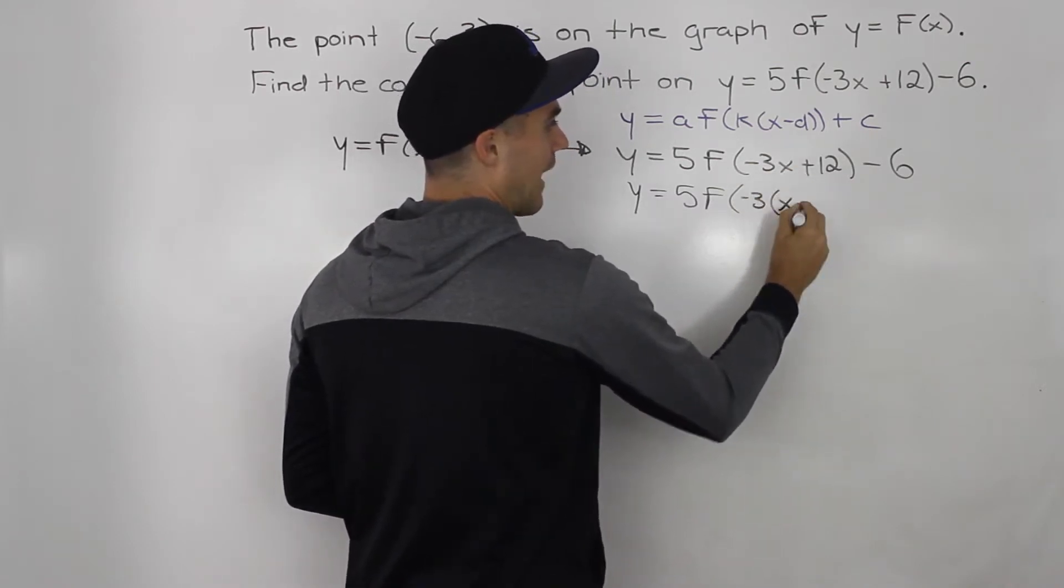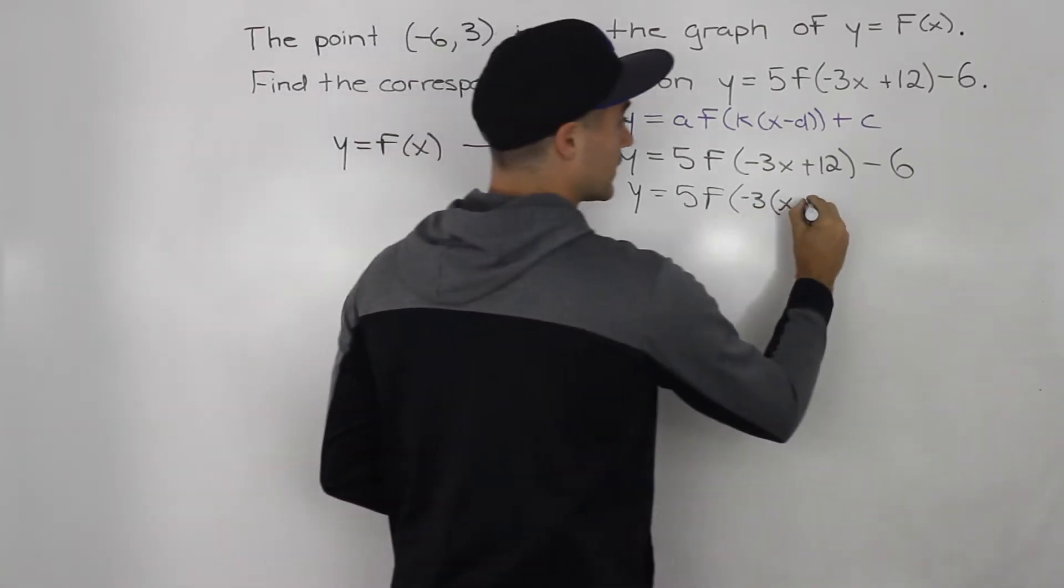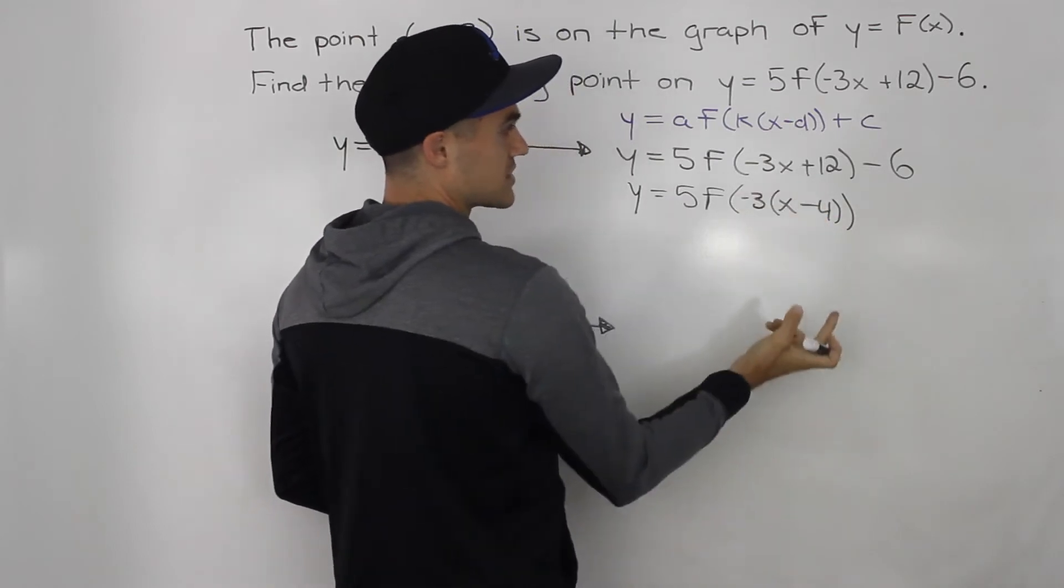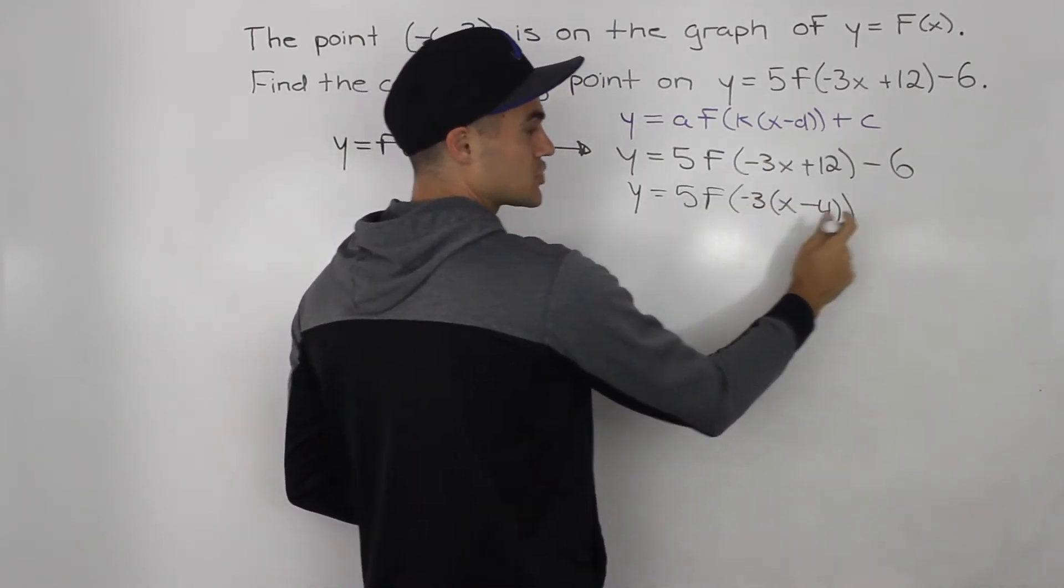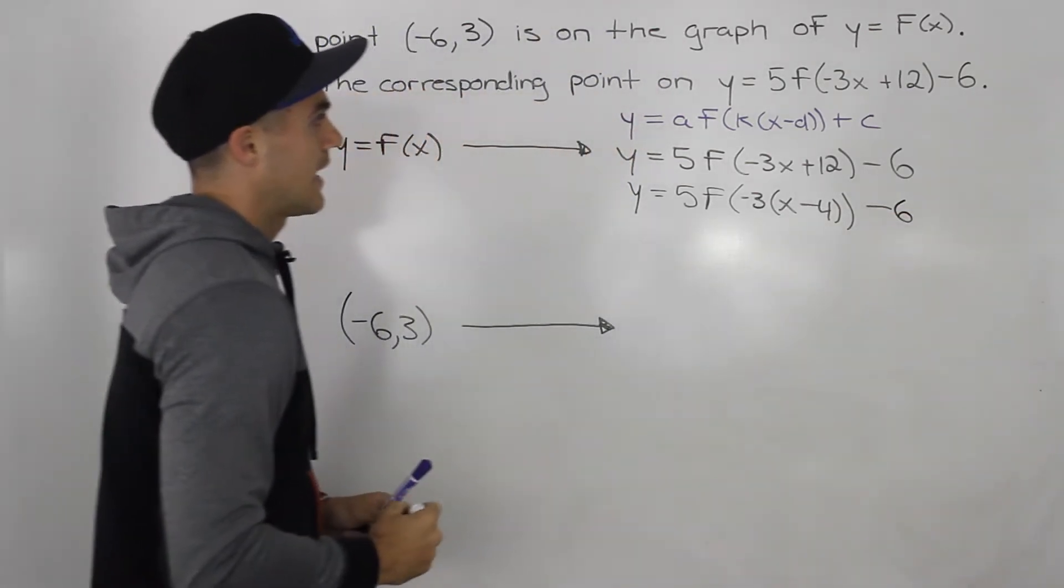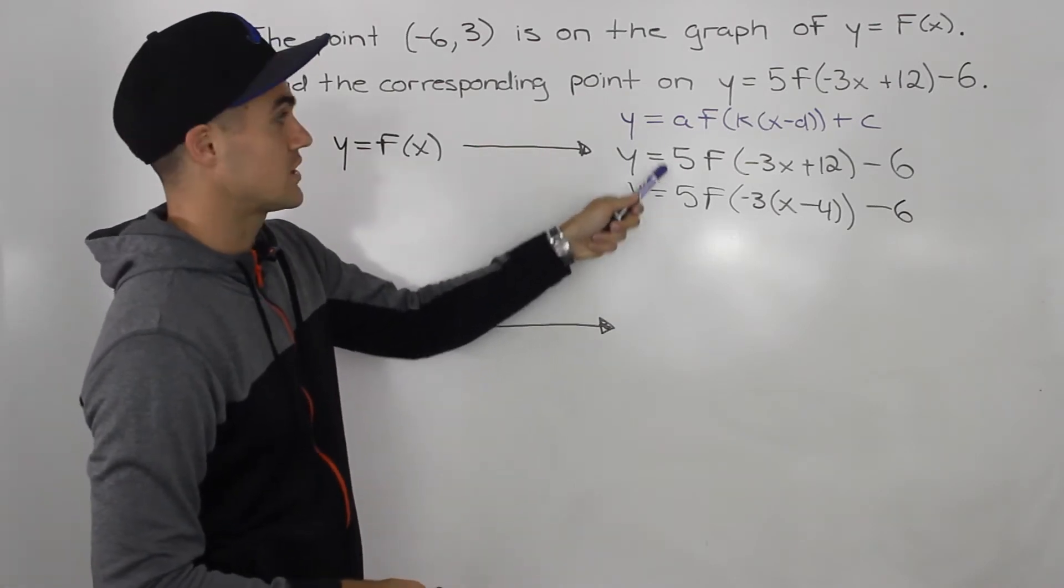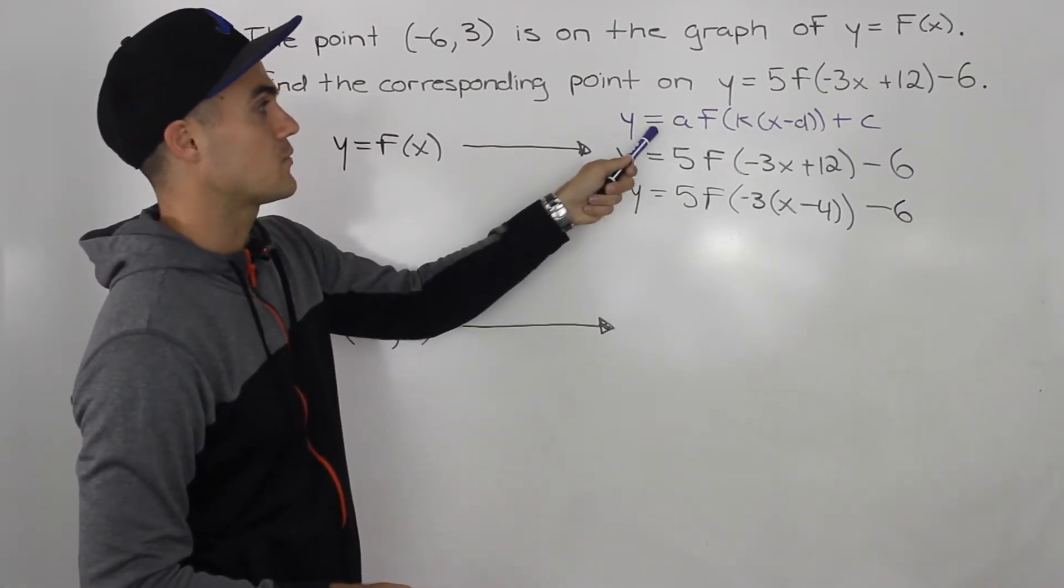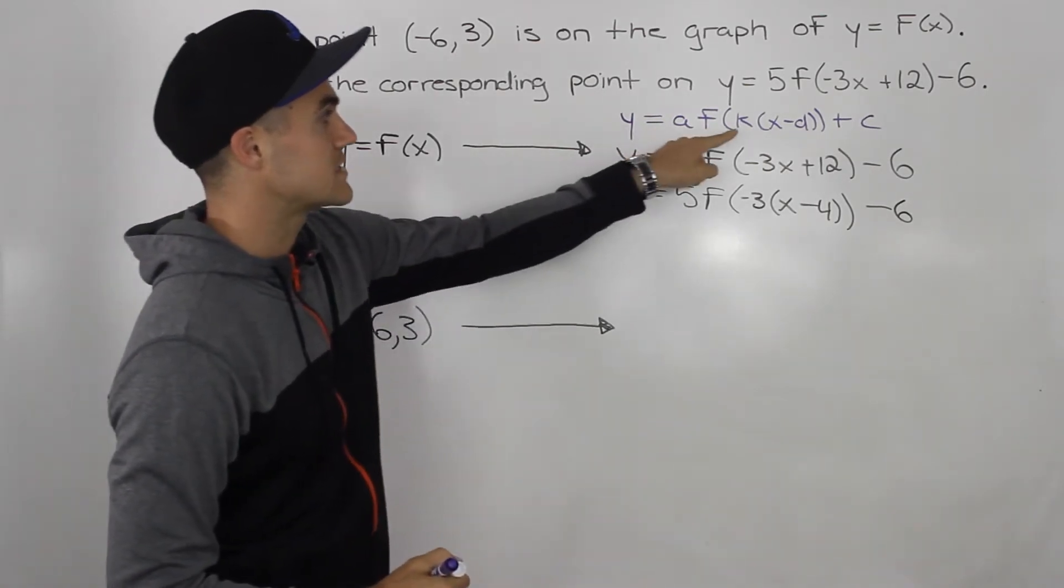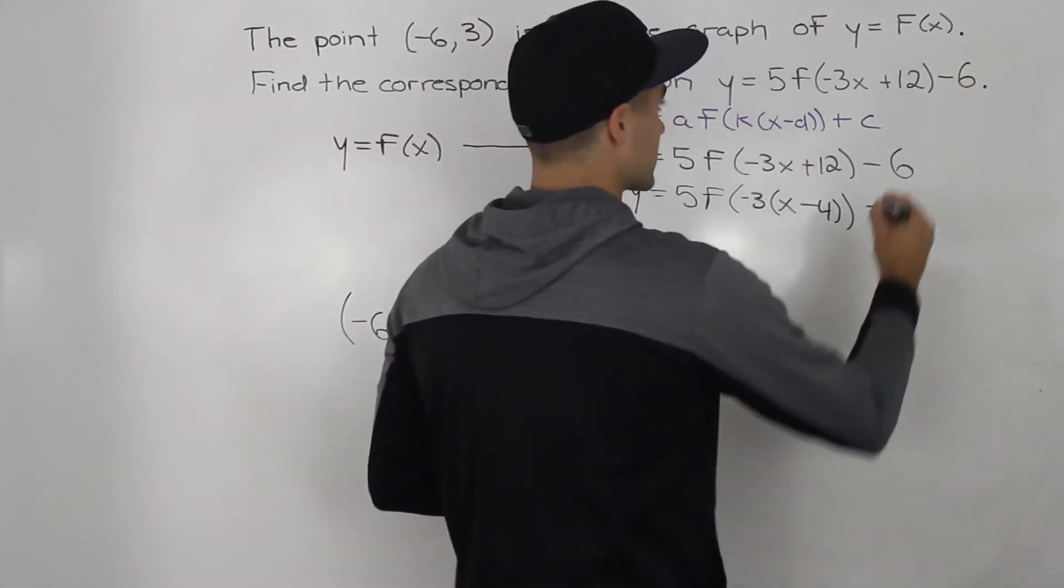And we would be left with x and then positive 12 divided by negative three, we're taking out the negative three would give us negative four. So just be careful with your signs here, because you took out a negative, the sign switches. And then you have minus six. And now we have our transform function in the general format that we needed in. And now we can figure out what's the a value, what's the k value, what's the d value, what's the c value.